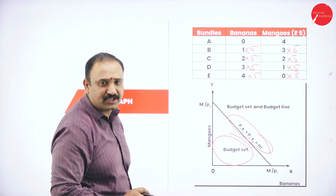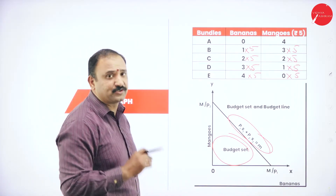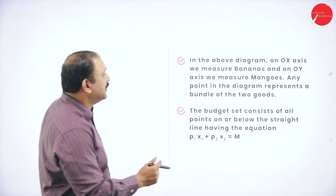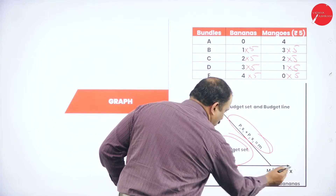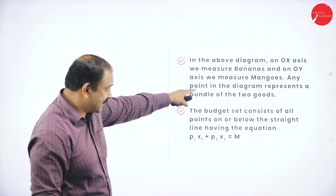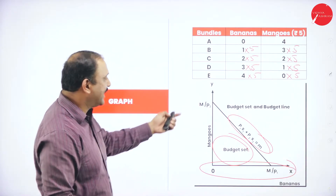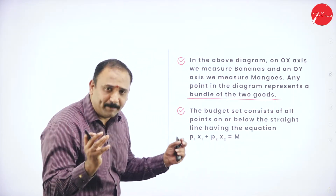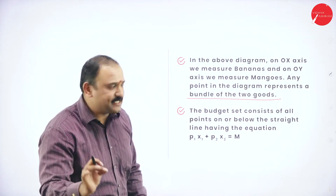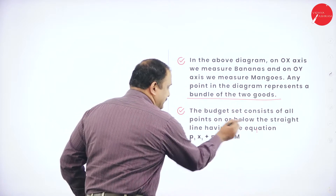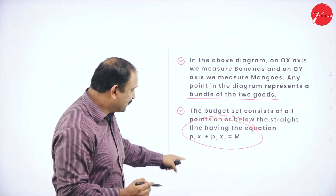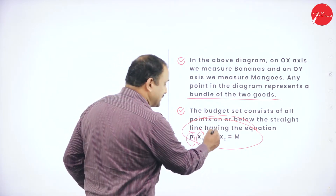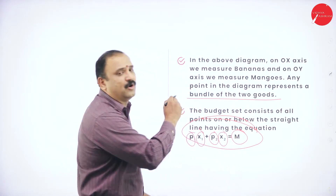Within this range and within these factors only, the consumer will be able to buy the given set of products — that is the importance of the budget set. In the diagram, the OX axis measures bananas and the OY axis measures mangoes. Any point on the diagram represents a bundle of two goods. The budget set consists of all points on or below the straight line with the equation P1X1 plus P2X2 equals M, where P1 and P2 are prices and X1 and X2 are quantities, equal to income M.